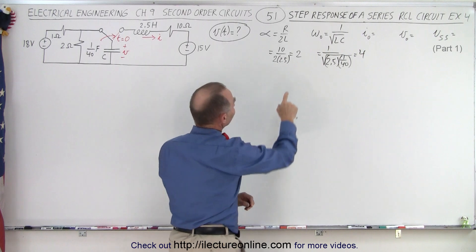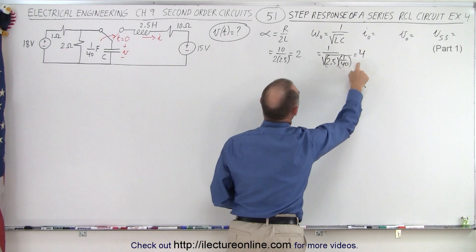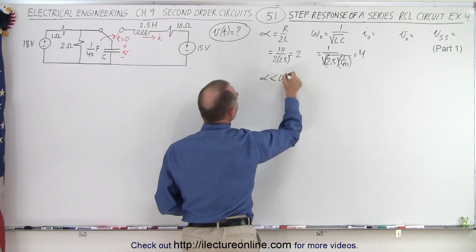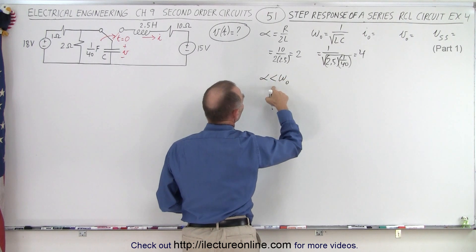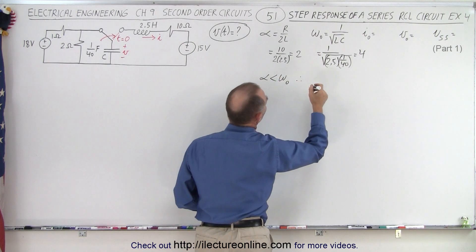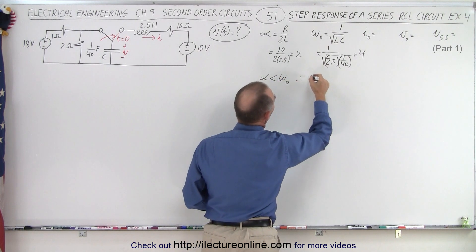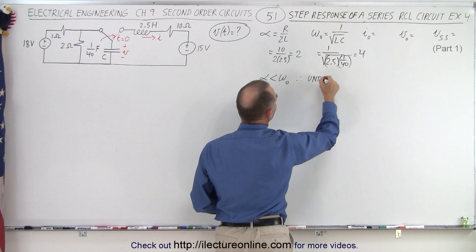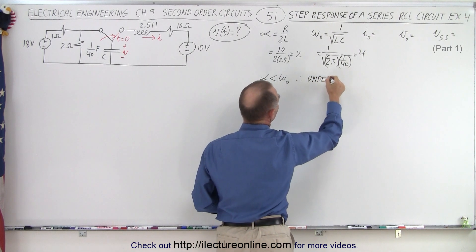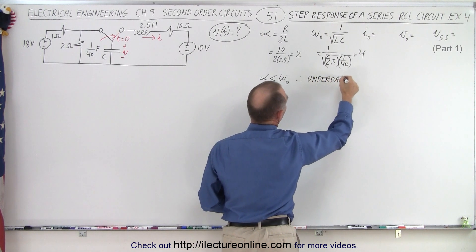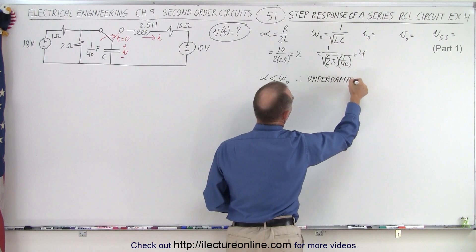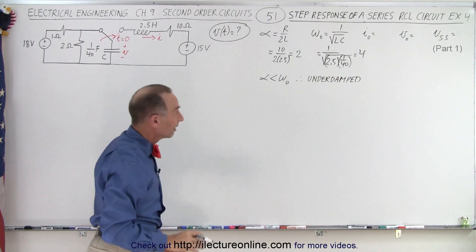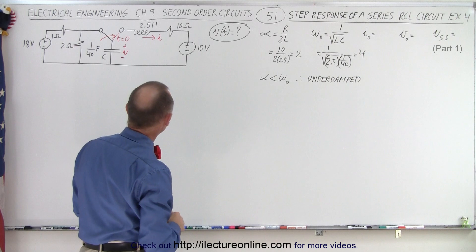Notice that alpha is smaller than omega sub-naught — alpha is smaller than the natural frequency — so therefore we are dealing with an underdamped case, which gives us the general equation for the voltage.